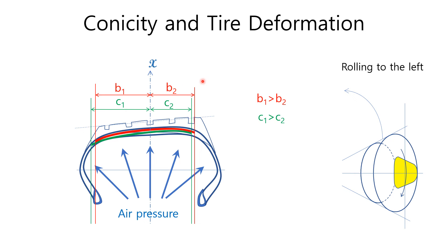This can also be explained by tire inflation as before. The tire cannot maintain its symmetric shape with respect to the longitudinal center line because the stiffness of the left half is bigger than that of the right half. Therefore, the right half radius is larger than the left half because the right half is more inflated than the left half. Consequently, the tire rolls to the left.